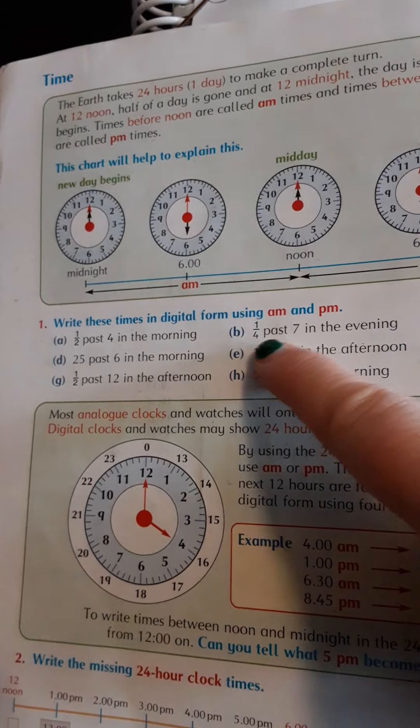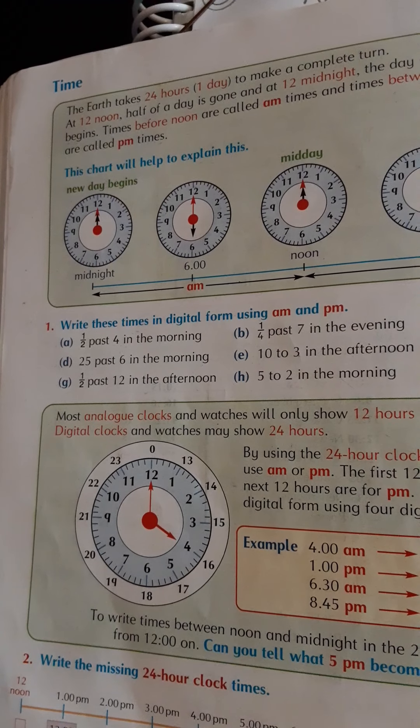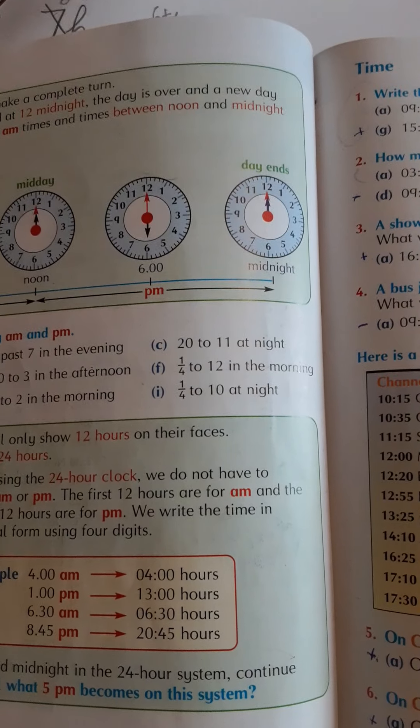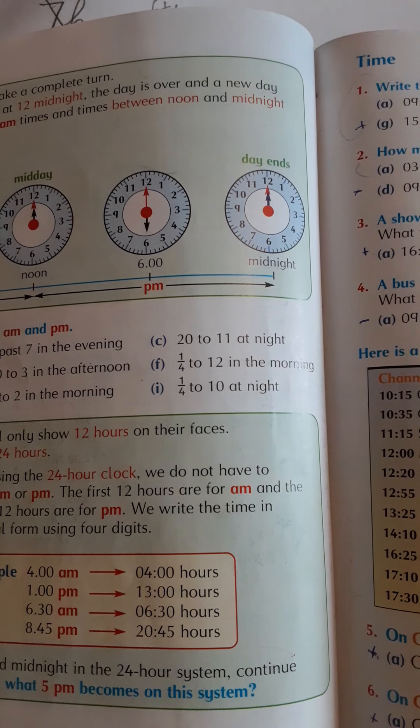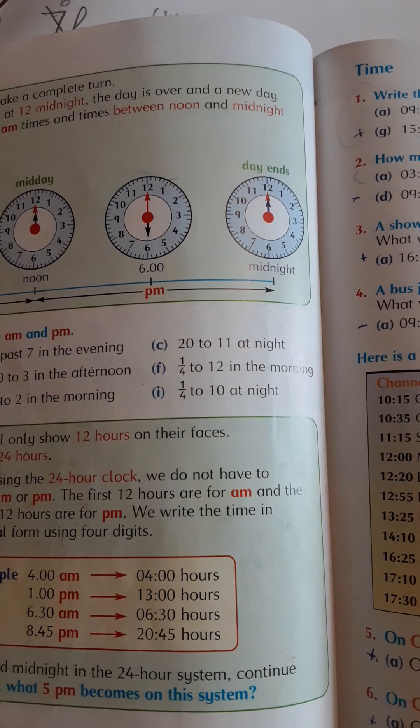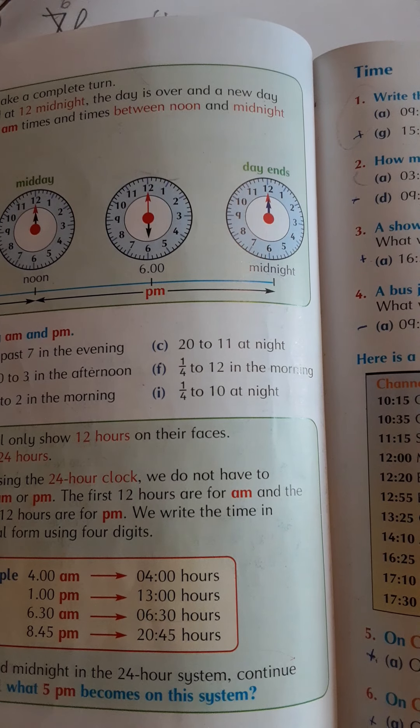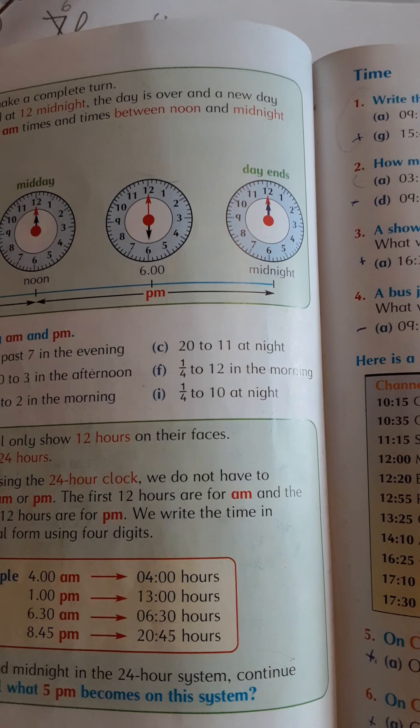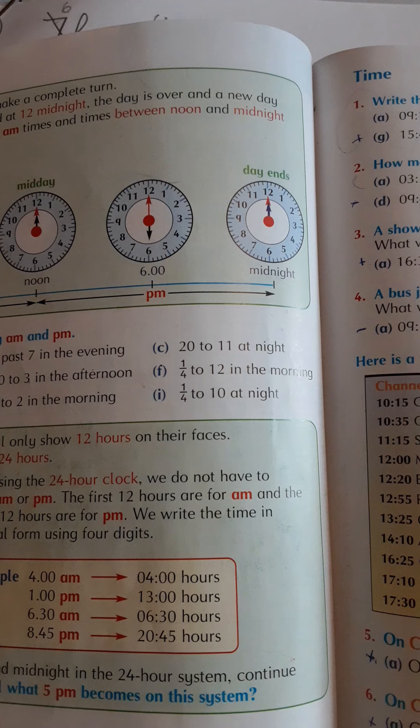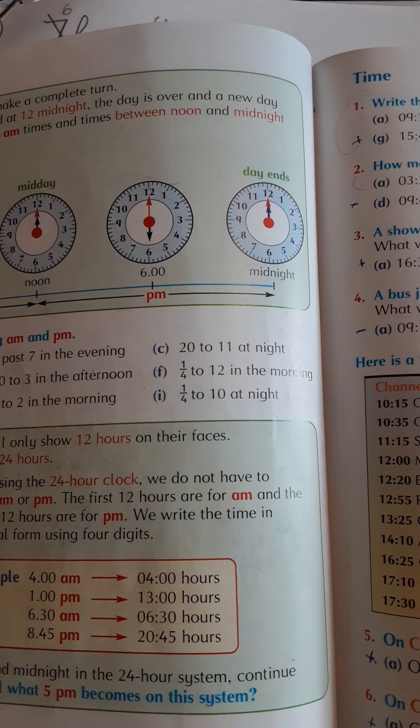Quarter past means 15 minutes past. 20 to 11, so on the digital clock that will be - it hasn't turned 11 yet, so it'll be 10 something, not 20. Try it for yourself. 20 to 11, imagine it.